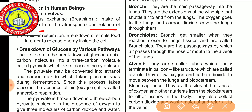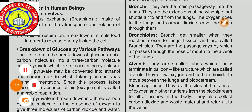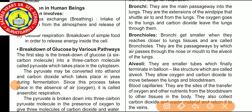Complex organic compounds are broken down into simpler organic compounds. The first step is the breakdown of glucose, a six-carbon molecule, into a three-carbon molecule called pyruvate, which takes place in the cytoplasm — this is called glycolysis. The pyruvate may be converted into ethanol and carbon dioxide, which takes place in yeast during fermentation. Since this process takes place in the absence of oxygen, it is called anaerobic respiration.